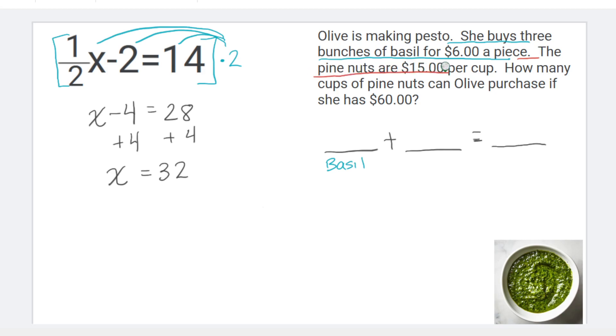The first thing that we see in here is this description of the basil. That's what's going to go in this first blank is my basil. The other object that we're buying is pine nuts.